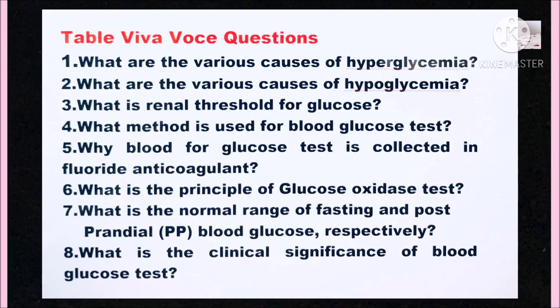See this video again to get answers for the following table viva questions: 1. What are the various causes of hyperglycemia? 2. What are the various causes of hypoglycemia? 3. What is the renal threshold for glucose? 4. What method is used for blood glucose test? 5. Why is blood for glucose test collected in fluoride anticoagulant? 6. What is the principle of the glucose oxidase test? 7. What is the normal range of fasting and postprandial blood glucose respectively? 8. What is the clinical significance of the blood glucose test?